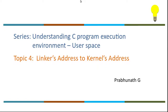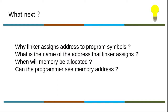Welcome to topic 4 of the series 'Understanding C Program Execution Environment in User Space.' In this session we will be discussing the linker's address and the kernel's allocated address, and how the mapping is set up. We will dig into at least one reason why the linker assigns addresses, and the other reasons will be discussed in coming sessions.